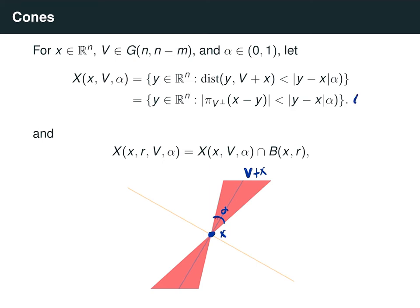An alternative definition: this cone is equivalent to the set of points y such that their orthogonal projection into v⊥ — translated to pass through x — satisfies that the projection of x minus y is less than |y minus x| times alpha. In other words, it's the set of points such that when projected into the plane v⊥, their distance decreases by at least a factor alpha. We can see here that a vector y in this cone, when projected down, is brought closer to x by a factor alpha.